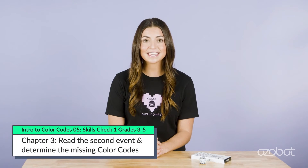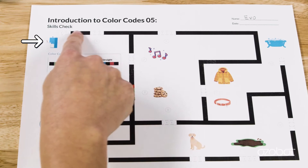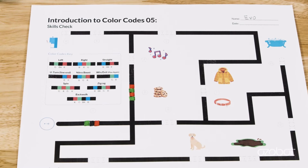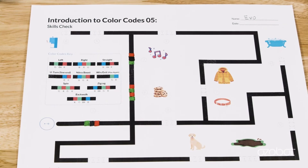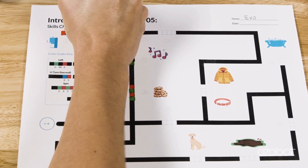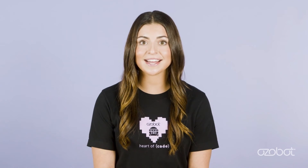On activity sheet one, the second event says: After eating the cookies, Ozobot was thirsty. It got a refreshing drink of milk. On activity sheet two, find the milk in the maze. The third missing color code programs Ozobot to move to the milk. Does Ozobot need to turn left or turn right at the intersection to get to the milk? The third missing color code is left at intersection. The fourth missing color code has two colors, so it must be a U-turn line end or a win exit. Since this is not the end of the maze, use the U-turn line end for the fourth missing color code. Use your color code markers to add the left at intersection color code for number three and the U-turn line end for number four.